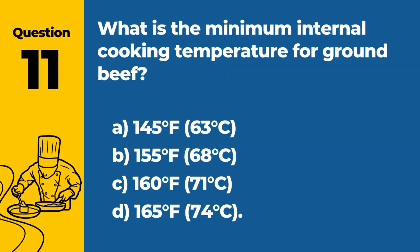Question 11: What is the minimum internal cooking temperature for ground beef? a. 145°F (63°C). b. 155°F (68°C). c. 160°F (71°C). d. 165°F (74°C). Answer: c. 160°F (71°C). The minimum internal cooking temperature for ground beef is 160°F to ensure it is safe to eat.